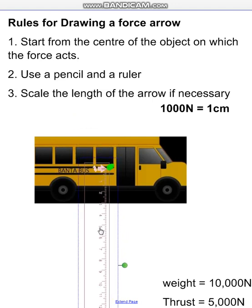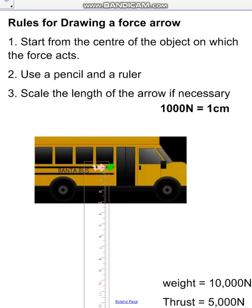My arrow needs to be ten centimetres long. So I start from the centre and I draw an arrow ten centimetres in length. There you go. One straight line using a ruler from the centre of the object. And the weight obviously acts towards the centre of the earth.